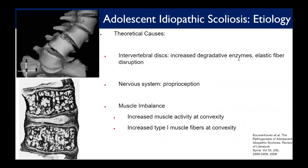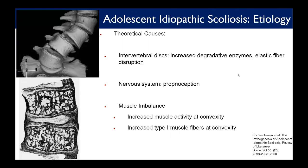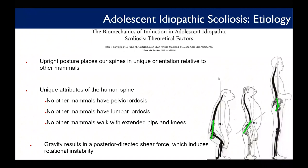The Hueter-Volkman principle can cause abnormal growth: compressive forces on the concavity cause decreased growth on that side, while distraction forces on the convexity cause increased growth — a chain reaction. A recent 2019 JBJS paper on biomechanics of scoliosis induction showed that upright posture places our spines in a unique orientation relative to other mammals. No other mammals have pelvic lordosis, lumbar lordosis, or walk with extended hips and knees, resulting in significant shear force from gravity that can induce rotational instability and focal lordosis.